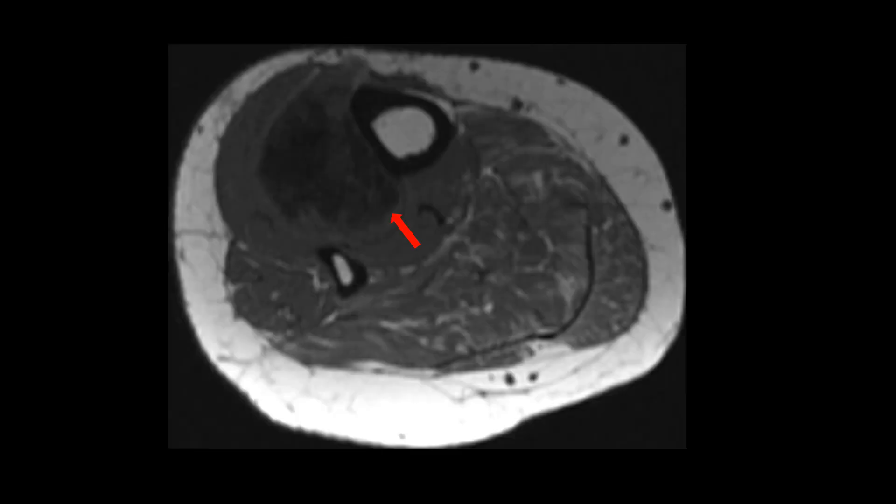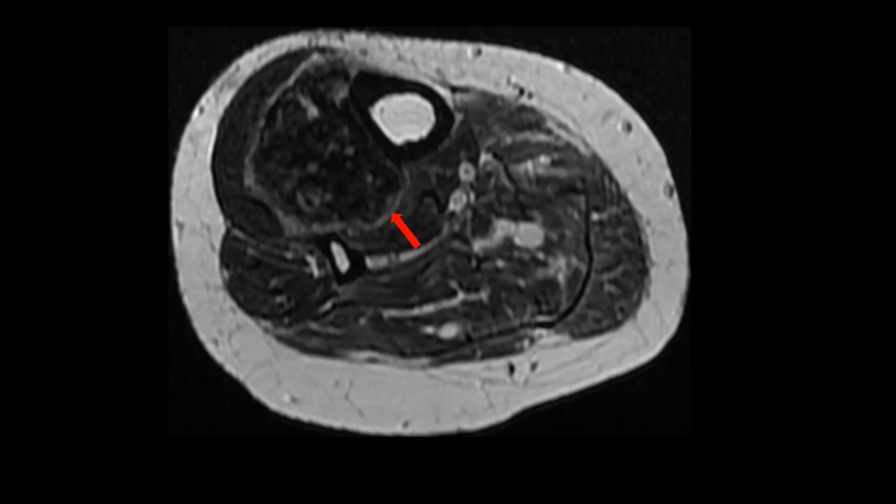On this axial T1-weighted image, we see that this lesion is hypointense with intact adjacent cortex, suggesting that this lesion arises from the outer periosteal layer of the tibial diaphysis. On axial T2-weighted image also, this lesion is hypointense with intact cortex and there is no obvious adjacent marrow involvement.